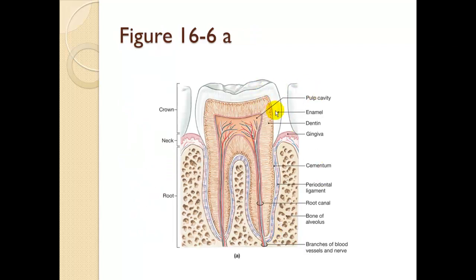All areas of the tooth: crown, neck, root. Most of the tooth is dentin. Also: gingiva, root canal, cementum, periodontal ligament. The nerve supply and vascular supply to the tooth come up through the root.